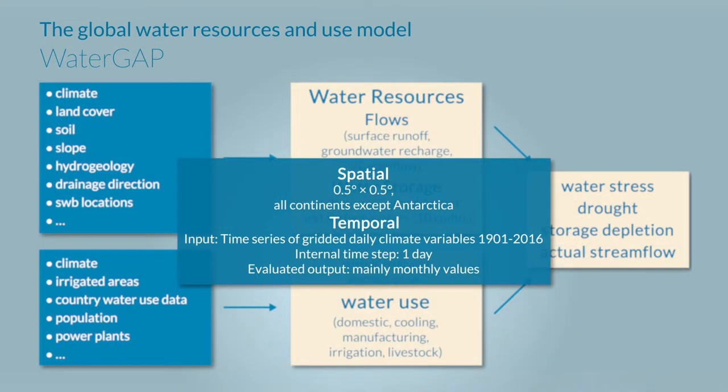WaterGAP has a daily resolution but normally we only look at monthly values and based on these monthly values of streamflow we can say if a drought is occurring or not.